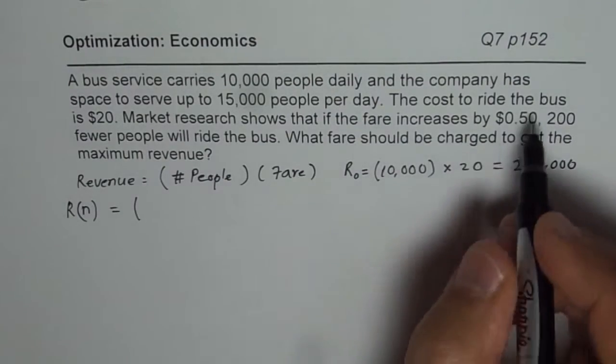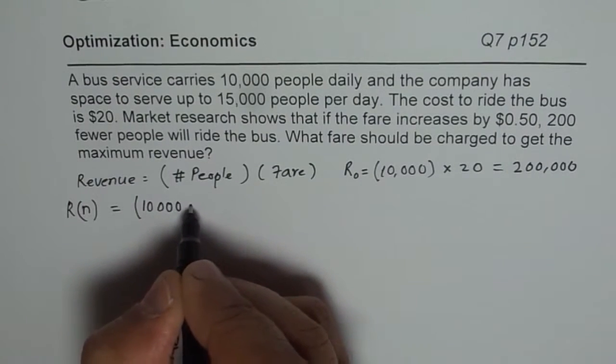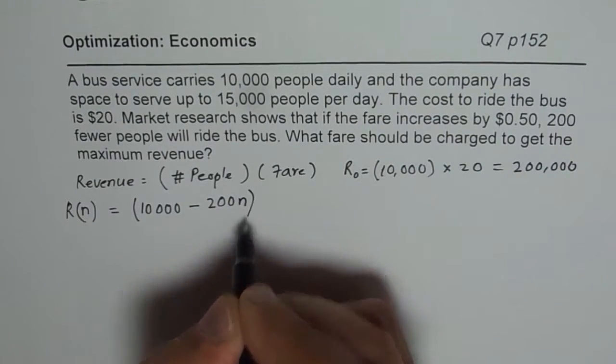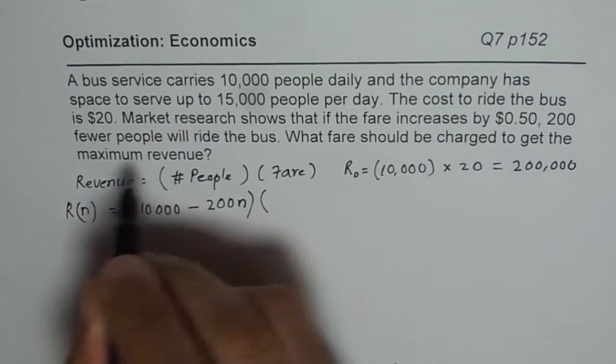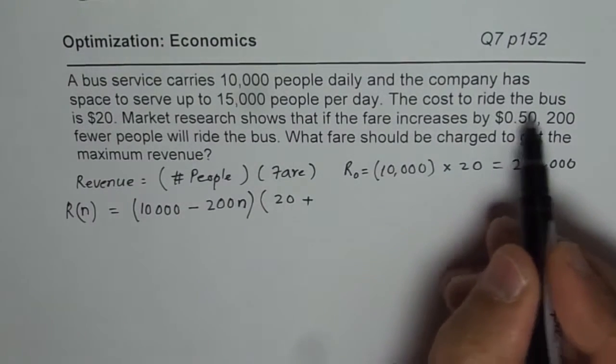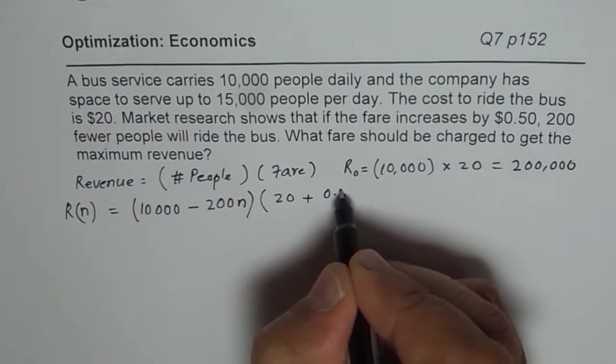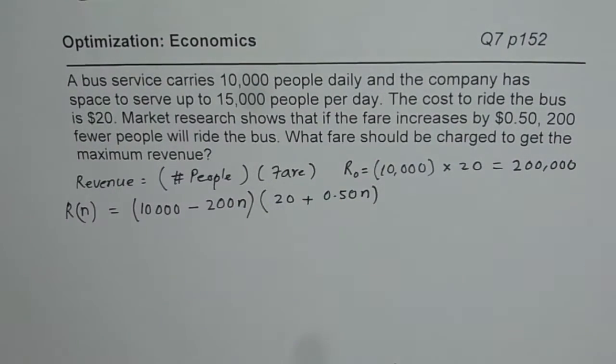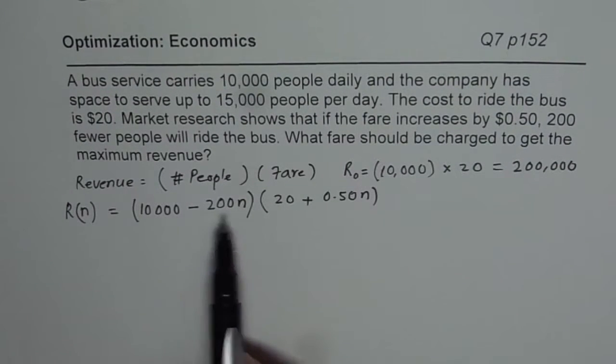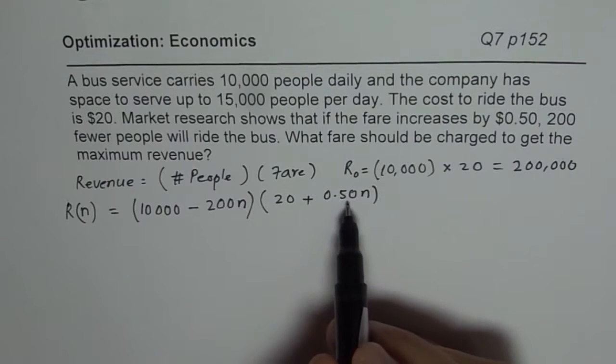So people normally are 10,000. So instead of 10,000, we'll have fewer people, 200 for every increase, that means minus 200N. And what is going to be the fare for you? It is 20 plus additional quantities of 50 cents. So 0.50N, that becomes your fare. So that is the revenue which could be generated by increasing the fare for the bus. Now these kinds of questions are also there for hotels and rents and similar things. So you could apply the same strategy.